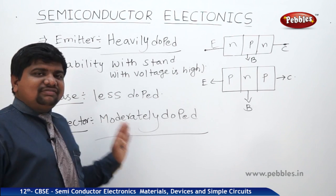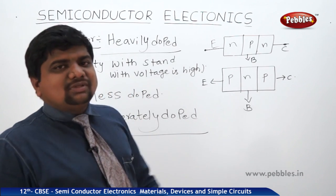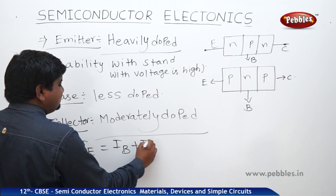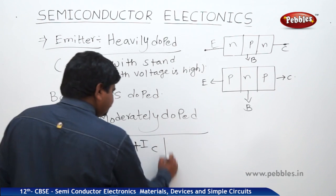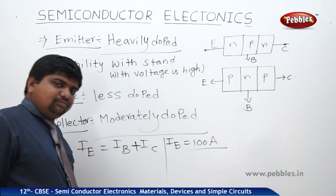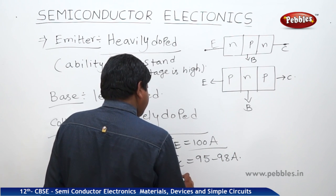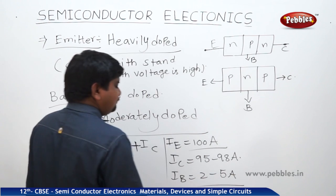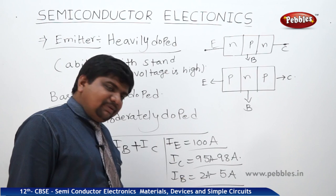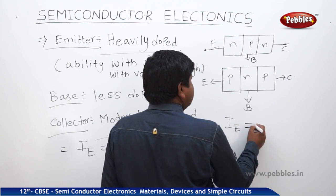When some amount of current is applied as input to the emitter terminal, the emitter current IE equals IB plus IC. Experiments have consistently shown that if IE is around 100 amperes, then IC is approximately 95 to 98 amperes and IB is 2 to 5 amperes. If we neglect the small loss at IB, we can say IE is approximately equal to IC.